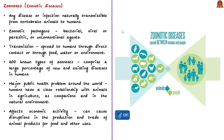Zoonotic diseases are assuming significance because humans have a close relationship with animals in agriculture, as companions, and in the natural environment. They represent a major public health problem — COVID-19 became a pandemic, which is a zoonotic disease. Additionally, they affect economic activity, causing disruptions in production and trade of animal products. For example, when bird flu was reported in Tamil Nadu and Kerala, the sale of chicken drastically fell. So zoonotic diseases impact both health and the economy.